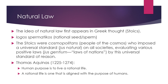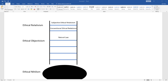Welcome back to the conclusion of the Ethical Task Lecture video. Now we're going to cover natural law. Natural law is going to be the first of the objective versions of ethics, the ethical objectivist version. We've looked at subjective ethical relativism and conventional ethical relativism. Now we're going to look at natural law as one of the rungs on the ladder to give us out of the pit of nihilism.